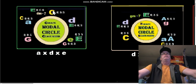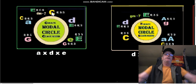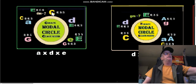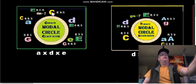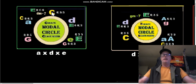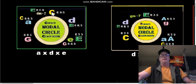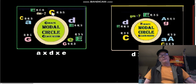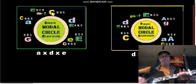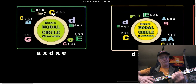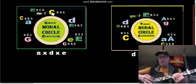On guitar it's called the CAGED system: C-A-G-E-D, and then it starts at C again. That could be in any key — it holds for all keys. So we have a C, D shape, and then we go to A — the same chord in a different inversion, or different sixth-string inversion. From the A shape you go to the G shape.